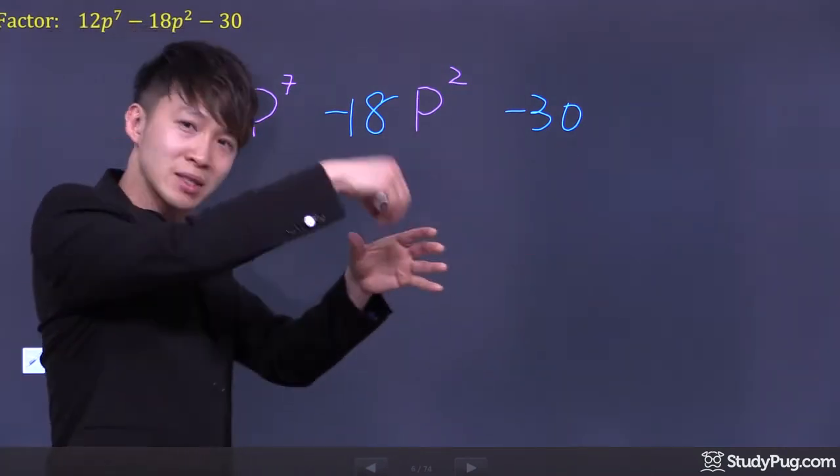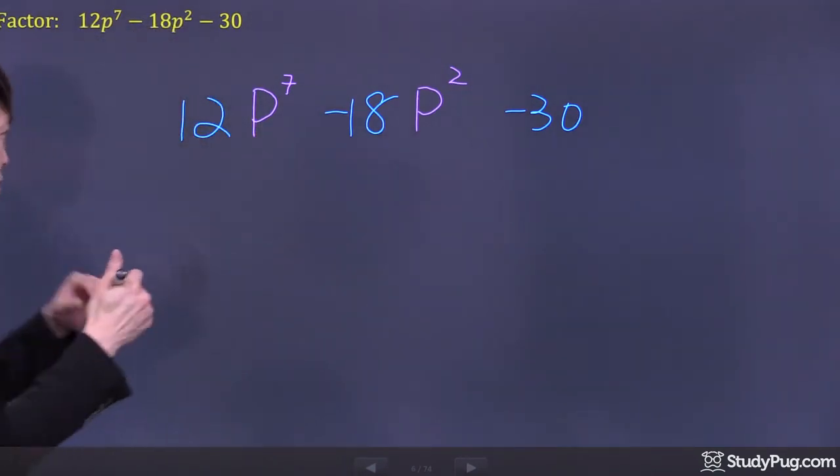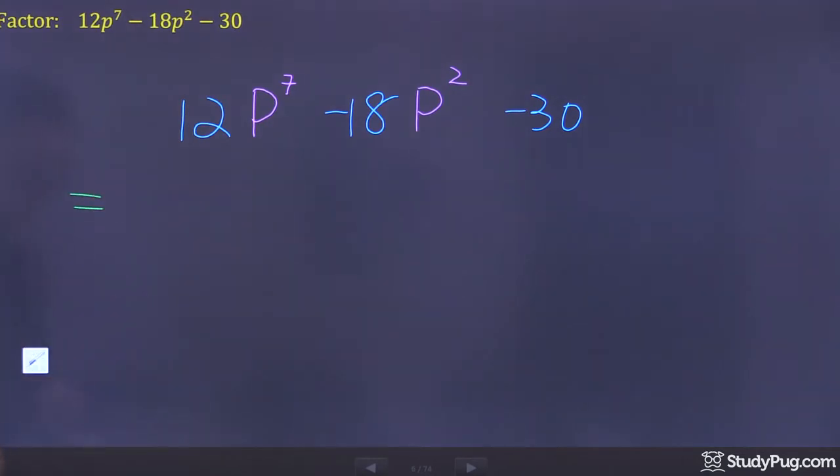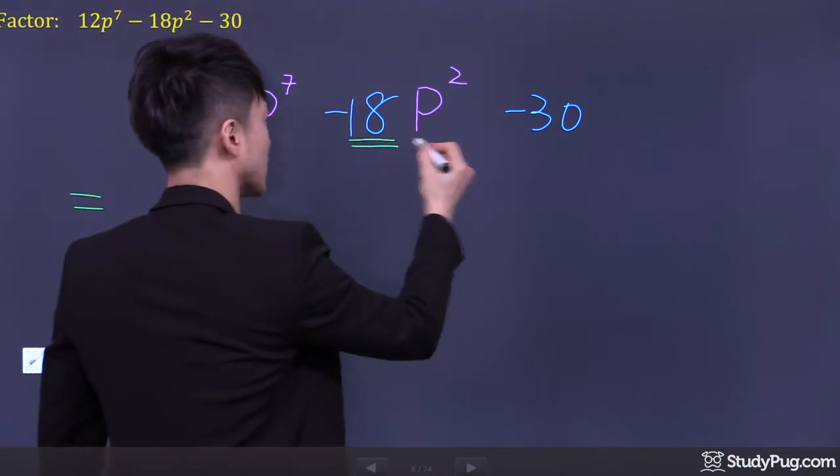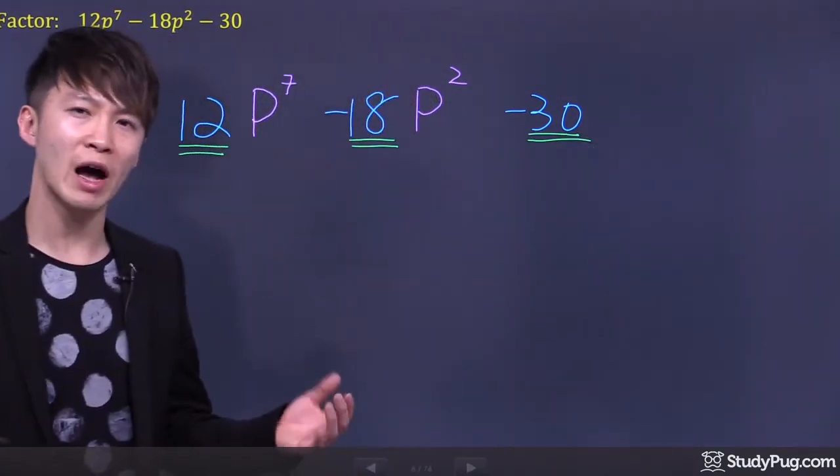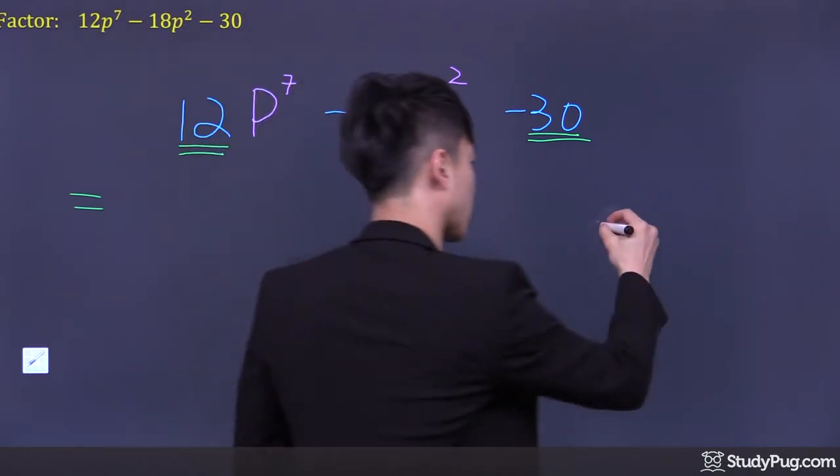Let's factor this polynomial by taking out any common factors. Focus on the numbers first. 12, 18, and 30. What is the common factor between these three numbers? Let's find out.